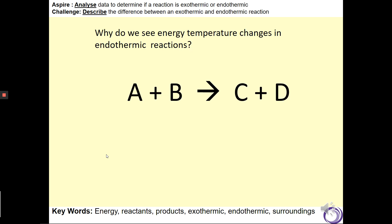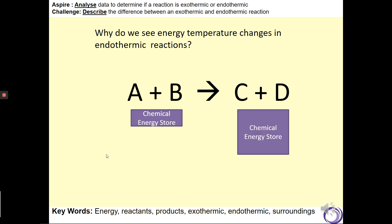So how are endothermic reactions different? Let's start again with A and B. In A and B, the chemical energy store is much less than the chemical energy store in the products C and D. So we need to get some more chemical energy from somewhere. The way that we do that is that we transfer thermal energy from the surrounding thermal energy store and convert that into chemical energy. When this happens, you will observe a decrease in the temperature.